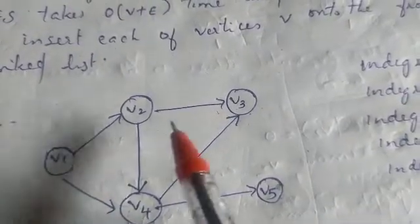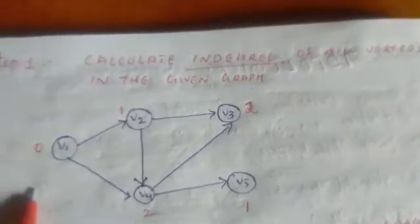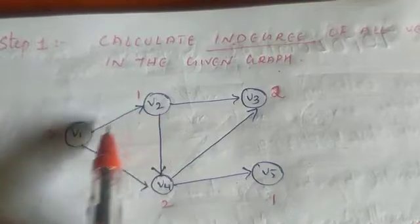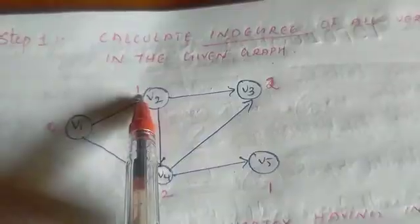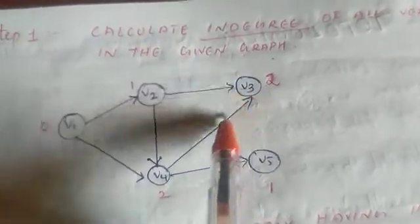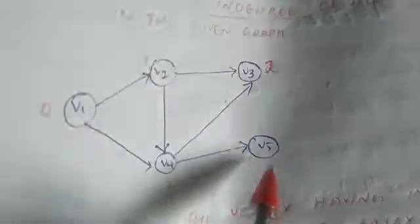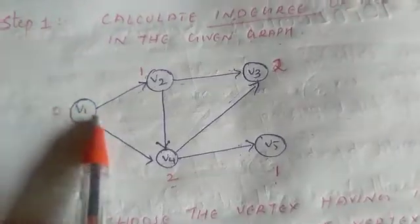We have to calculate the in-degree of all vertices in the given graph. We calculate the edges: V1 has in-degree 0, V2 has in-degree 1, V3 has its edge, V4 has its edge, and V5 has in-degree from V2. Here we can see which vertex has in-degree 0.